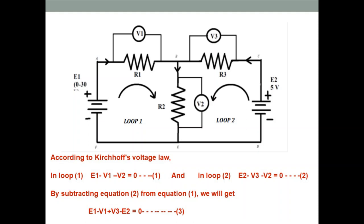Look at the first loop. If we form the KVL equation for this loop in the clockwise direction, the battery's positive sign is in the clockwise direction in loop 1, so E1 potential is assumed positive. Resistance R1 drops potential, so voltage across it is represented as minus V1, and voltage across R2 is also represented as minus V2. So the first loop equation is: E1 − V1 − V2 = 0.